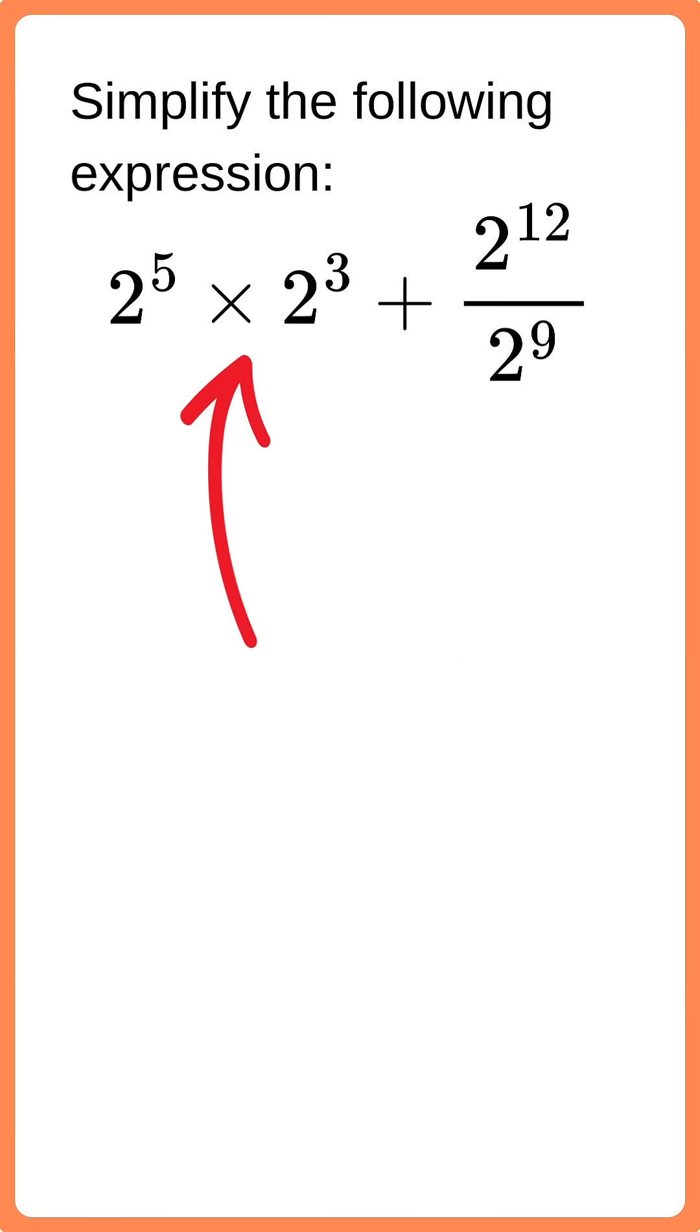So, 2 to the 5 times 2 to the 3 will be 2 to the power of 5 plus 3, which equals 2 to the power of 8.